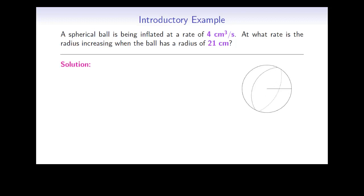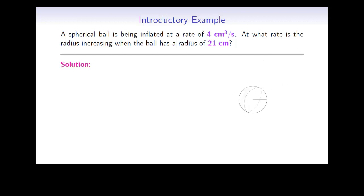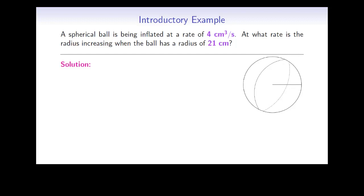As we can see in the pictures, as the volume of air in the ball increases, the ball swells and its radius is getting larger. The question we're being asked is, if we know how fast the volume is increasing, how fast must the radius be increasing? To solve this problem, we take advantage of the relationship between the volume of the sphere and its radius. Let's list the known and unknown quantities and label them on a diagram. Let's use V for volume, R for radius, and T for time.